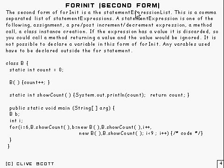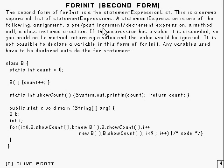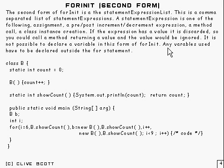This is the other form of for-init, and it consists of a statement expression list — a comma-separated list of statement expressions. A statement expression is either an assignment, a pre- or post-increment or decrement expression, a method call, or a class instance creation. If the expression has a value, it's discarded — so you could call a method that returns a value and that value would be ignored. In this form of for-init, it's not possible to declare a variable, so any variable used must be declared outside of the for statement.